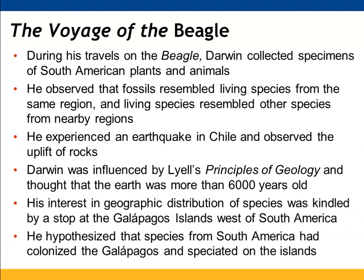Darwin traveled all over the world on the Beagle and collected specimens of lots of South American plants and animals. He observed that fossils seemed to resemble living species from the same region, and that living species in one region resembled living species in other regions. He had the opportunity to experience an earthquake in Chile and observe rock movement, and was influenced by Lyell's studies of geology and the age of the Earth. He became more interested in the geographic distribution of species when he stopped at the Galapagos Islands, west of South America. His thoughts were that species from South America had colonized the Galapagos and then underwent speciation on the islands.